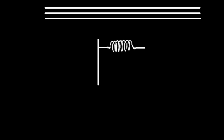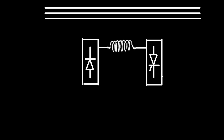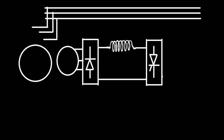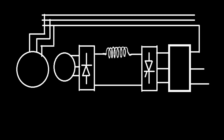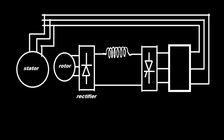The slip energy recovery scheme basically consists of a rectifier, reactor, converter, and transformer. The rectifier is connected to the rotor, which converts AC to DC and forces the power to flow away from the winding. The reactor is used to smoothen the current. The phase-controlled converter is used in inversion mode as an inverter for converting DC to AC. The transformer is used to improve the power factor.